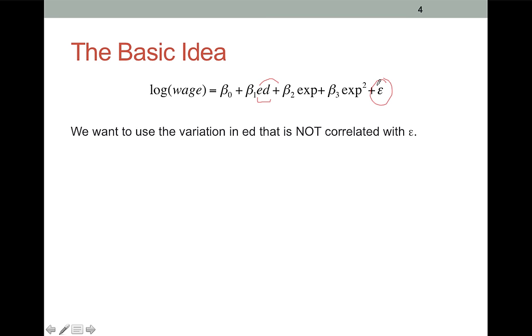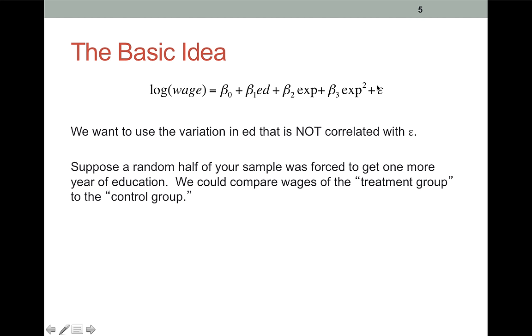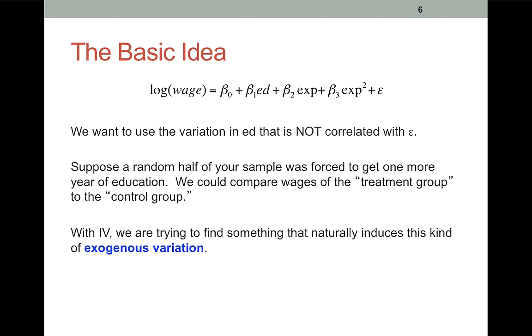One way to do this would be to run an experiment. Suppose we took a random half of your sample, and we forced them to get exactly one more year of education. We could compare the wages of that treatment group to the control group, and the difference is going to be the effect of a year of education on wages. With IV, what we're doing is we're trying to find something that naturally induces this kind of exogenous variation.